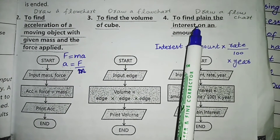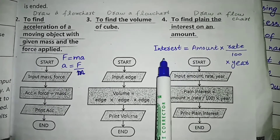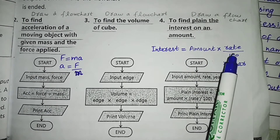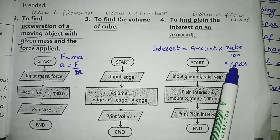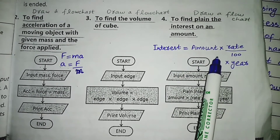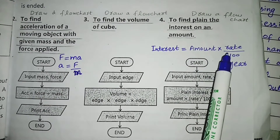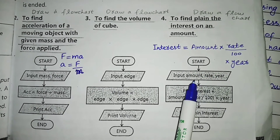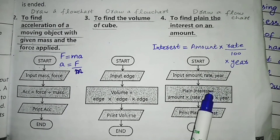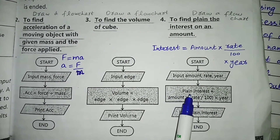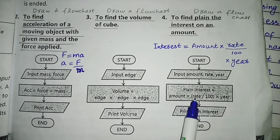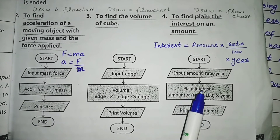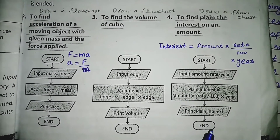The next flowchart is to find the simple interest on an amount. The simple interest formula is: Interest = Amount × Rate / 100 × Year. To calculate interest, we need three input values: Amount, Rate, and Year. The flowchart starts with the start symbol, then a parallelogram to input Amount, Rate, and Year. The rectangle shows the processing: Plain Interest = Amount × Rate / 100 × Year. Then a parallelogram output symbol prints the plain interest, and this is the end of the flowchart.